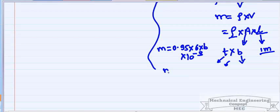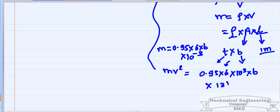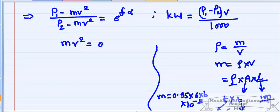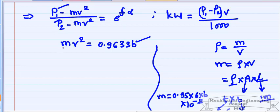We have three unknowns: P1, P2, and B (width). We have only two equations so far, so we need a third relation. We know that stress = force/area, so tension P1 = σ × area = 1.75 × 6 × B = 10.5B N. This gives us the third equation.